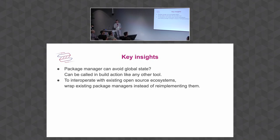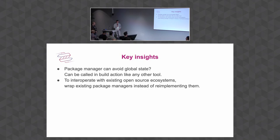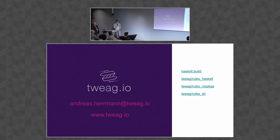Our key insights: if the package manager for your language can be made to avoid global state, then it can be called in a build action just like any other build tool. We find that the most efficient way to integrate with the existing library ecosystem is to wrap the existing package manager into Bazel instead of trying to reimplement it within Bazel. If you're interested in the rule sets we're implementing — rules_haskell, rules_nix_packages, and rules_sh — check out haskell.build and tweak.io. Thanks.